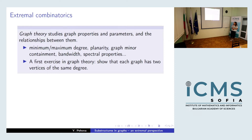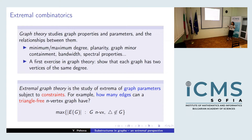Extremal graph theory, summarized in one sentence, is the study of the extrema of graph parameters subject to constraints. For example, we could ask how many edges can be in a graph on n vertices without triangles. The edges are the graph parameter I'm extremizing, and the constraint is that the graph has no triangles.